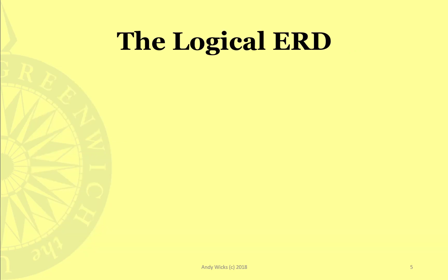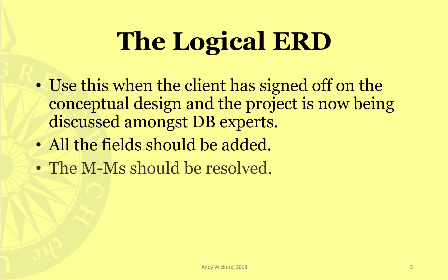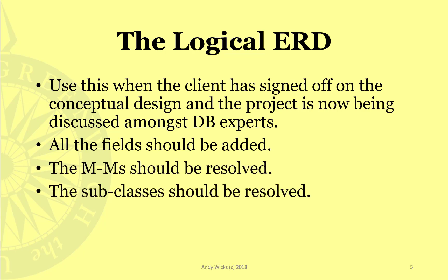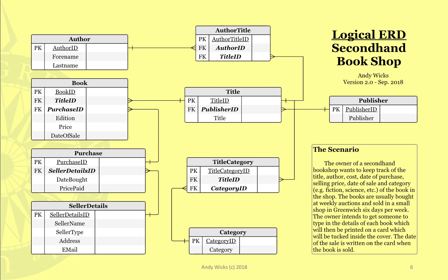You use the Logical Entity Relationship Diagram when the client has signed off on the conceptual design and the project is now going to be discussed amongst database experts. All the fields should be added, all the many-to-many relationships should be resolved, and the subclasses should be resolved. The field types may be missing at this stage because we may want to change them — for example, from text to numeric or from date to text. A logical ERD for the second-hand bookshop would look like this: all the field names have been added, the many-to-many relationships have been resolved, and the intersection entities are now there.